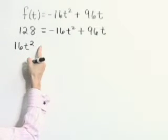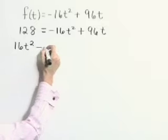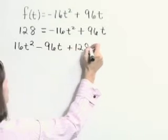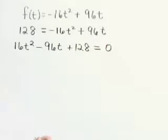We'll subtract that 96t from both sides. So minus 96t on the left and plus our 128 is equal to zero.